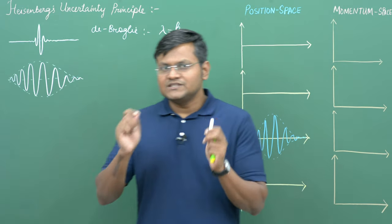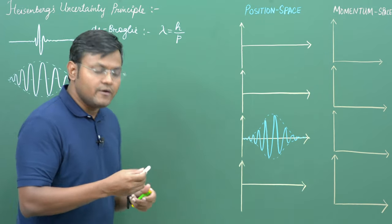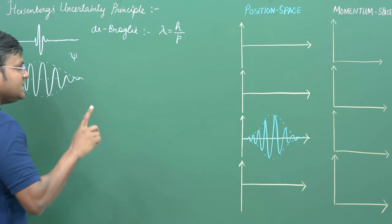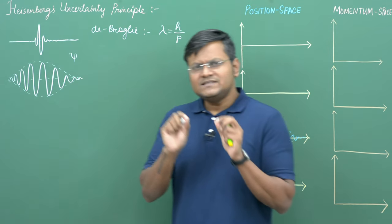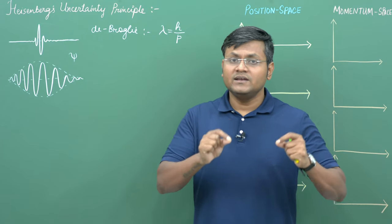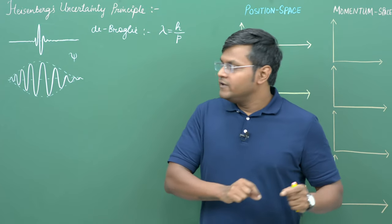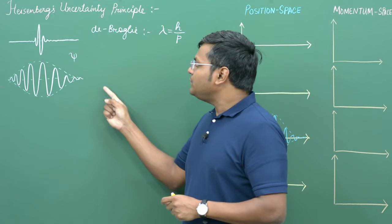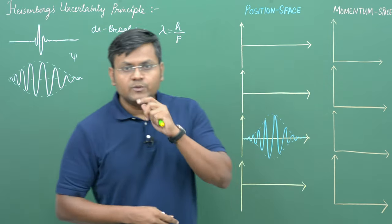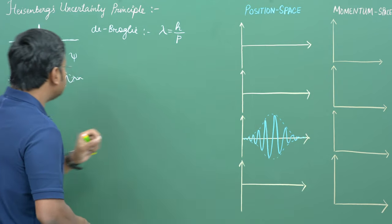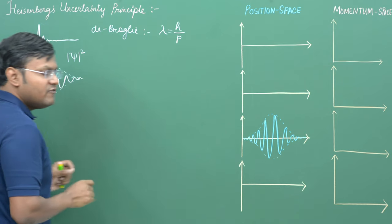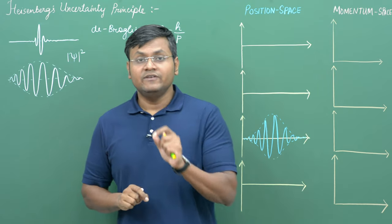This wave packet is constructed by a wave function that we call psi. What is the physical interpretation behind psi? It basically gives us an idea about the likelihood of where the particle is going to be found. Wherever the wave has a greater amplitude, there is a greater likelihood that the particle will be found there. To be precise, psi mod square gives us the probability density of a particle being found at a given location.